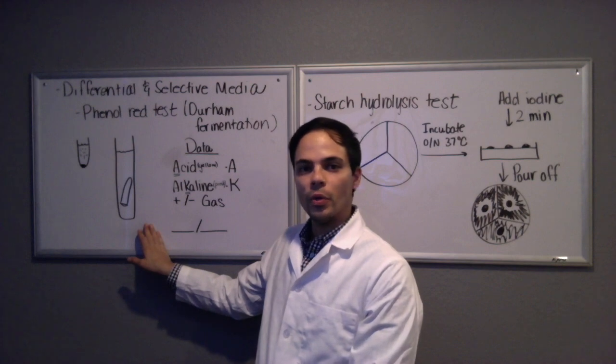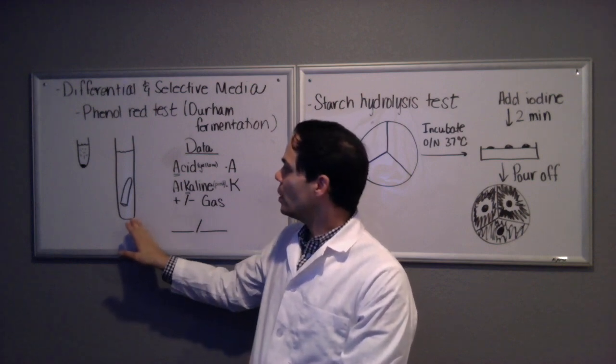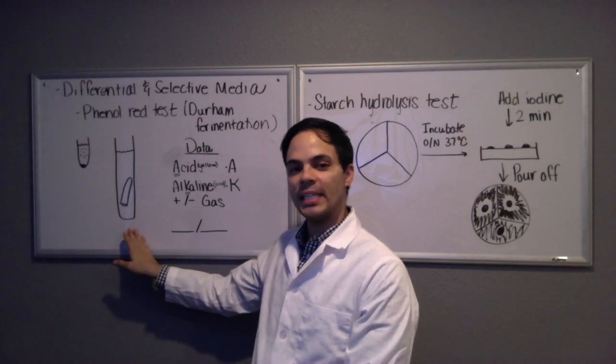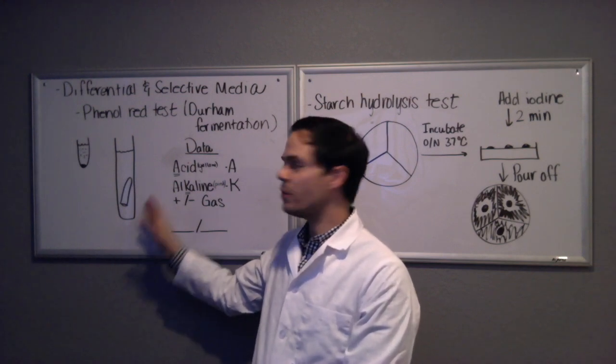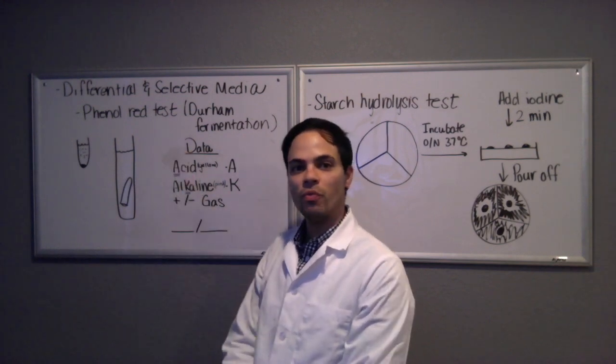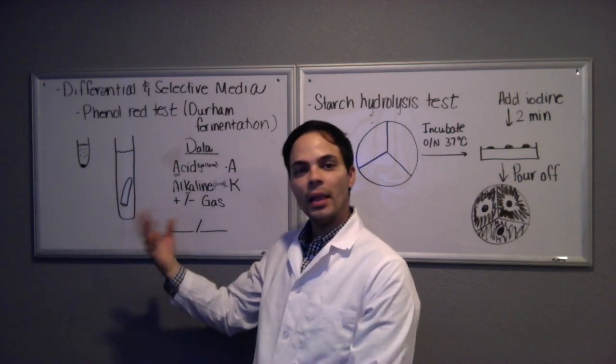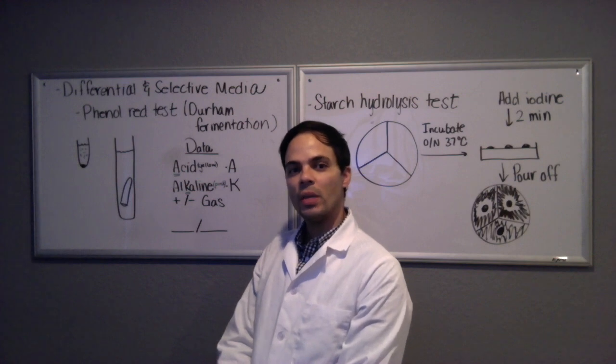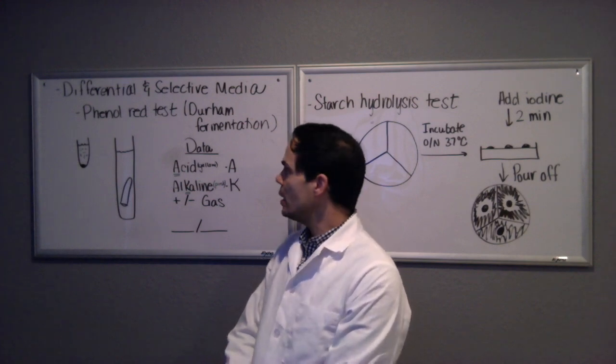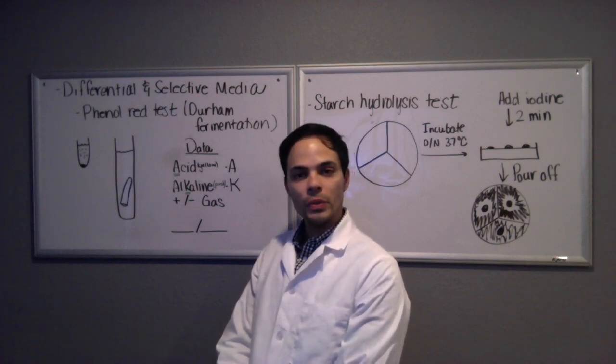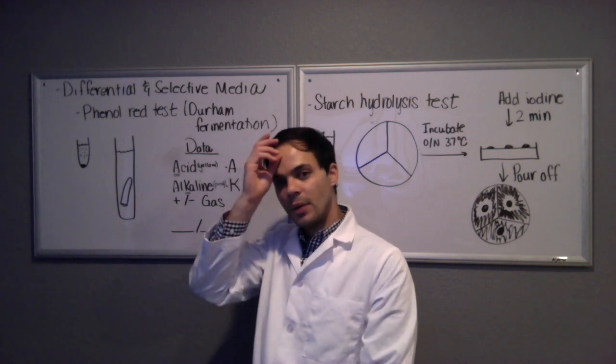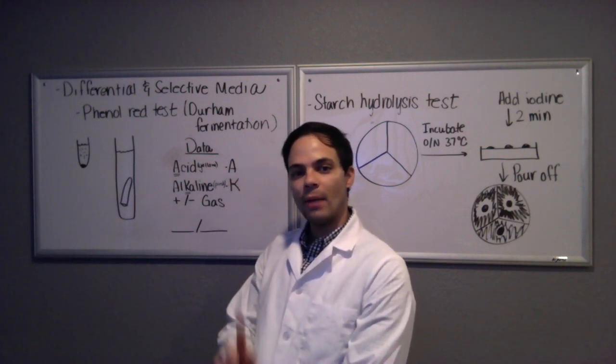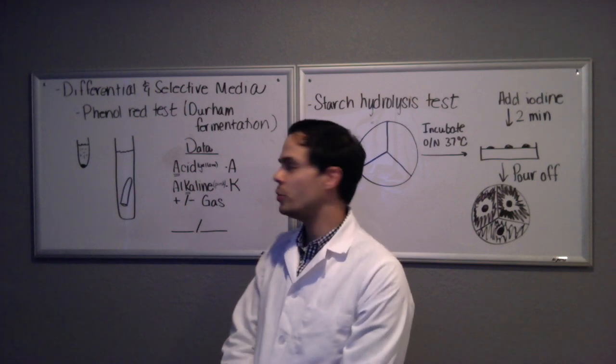In this test that we are doing here, we are testing to see if the bacteria can ferment lactose. With the phenol red broth that is used for this test, lactose sugar would have been the sole sugar added to this broth so that we can be sure that if the lactose is eaten up by the bacteria and fermented and it produces acidic byproducts, that would be the only sugar available for them to ferment.